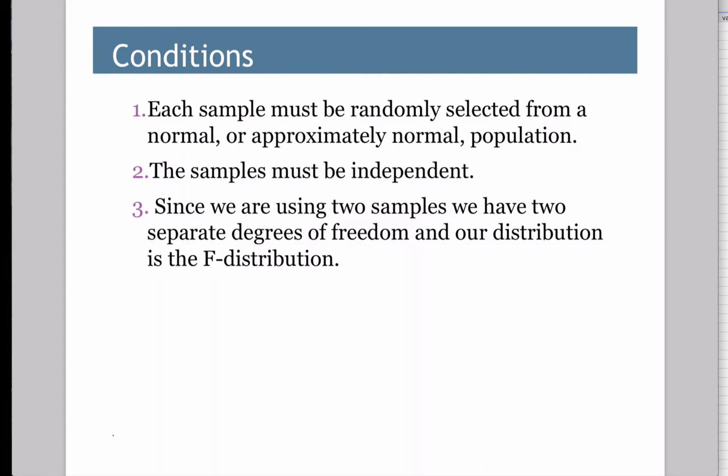Conditions. Of course, each sample must be randomly selected from a normal or approximately normal population. We have two groups now, and so those groups need to be independent of each other. For example, like teen smokers and adult smokers, or males and females, et cetera.